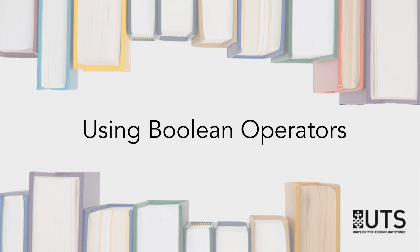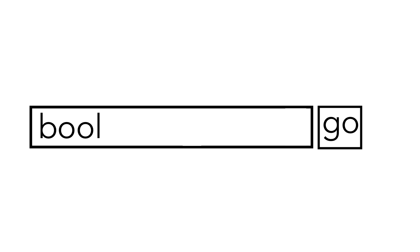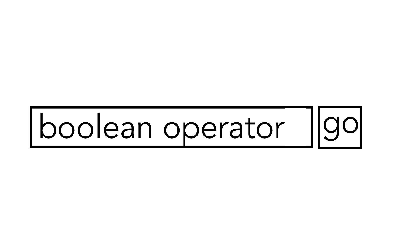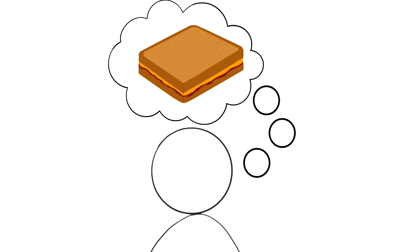Boolean operators are a type of search operator used in databases and search engines like Google to control how your keywords are combined. To show how they work, we'll use them to order a delicious peanut butter and jelly sandwich.